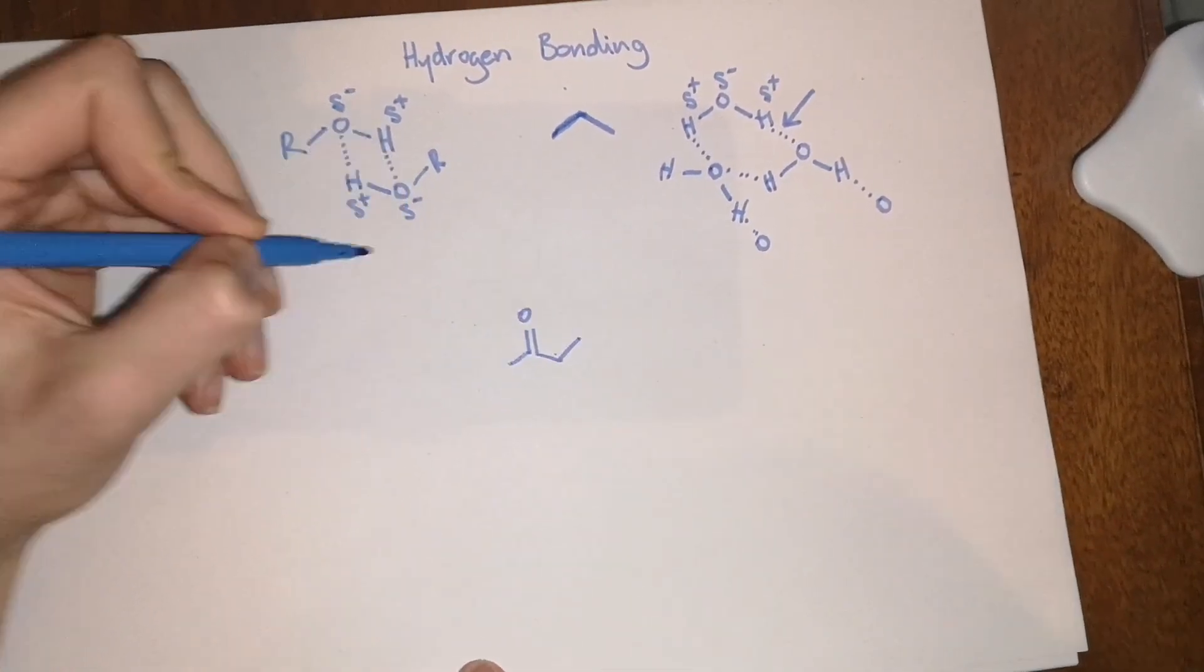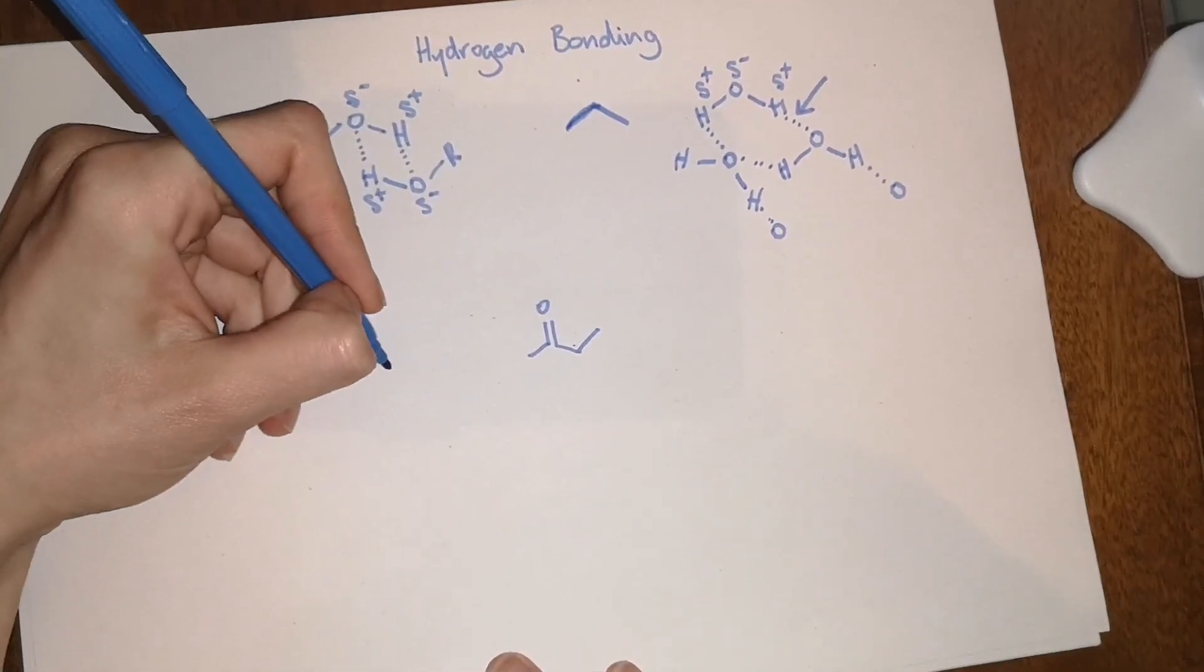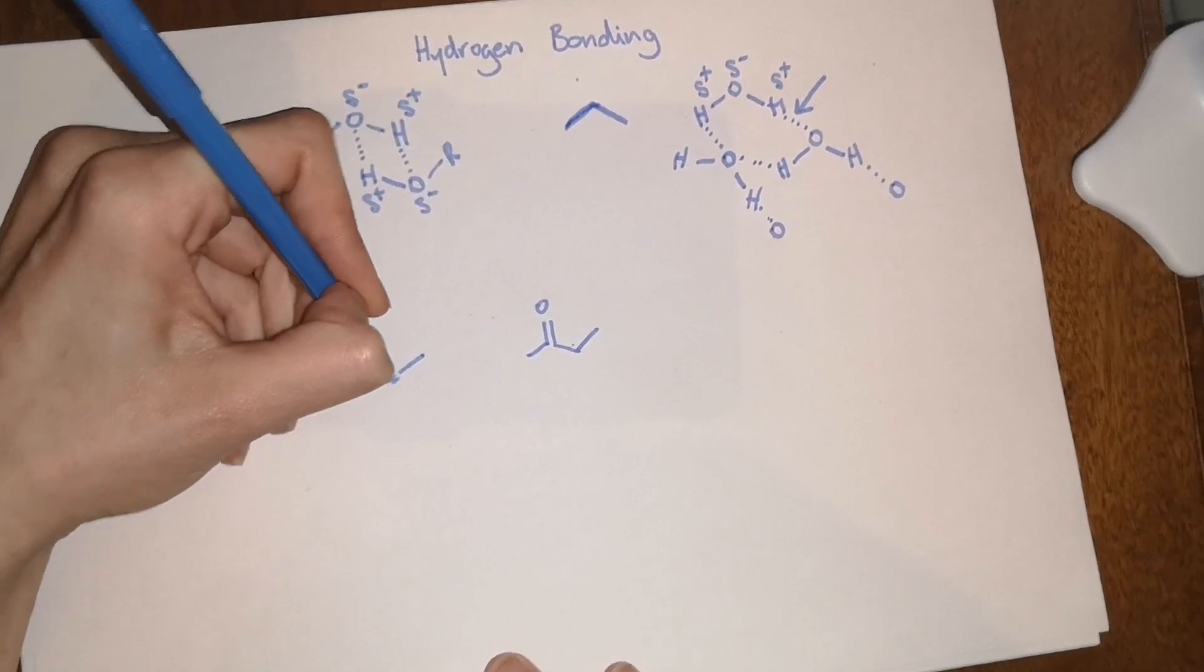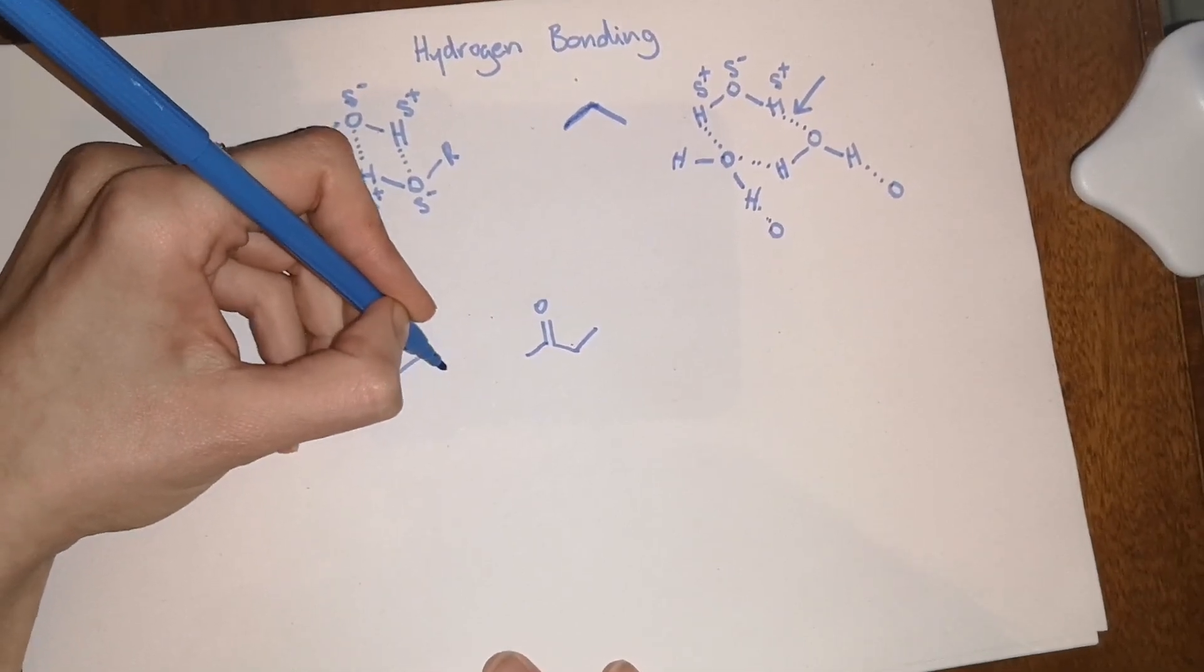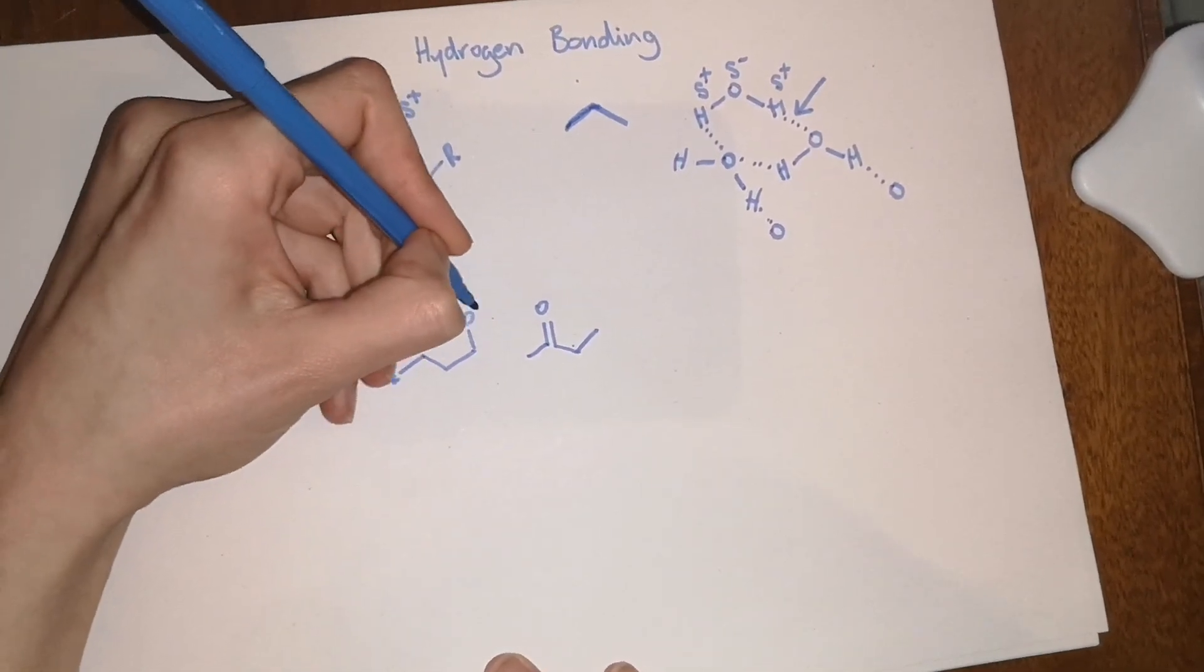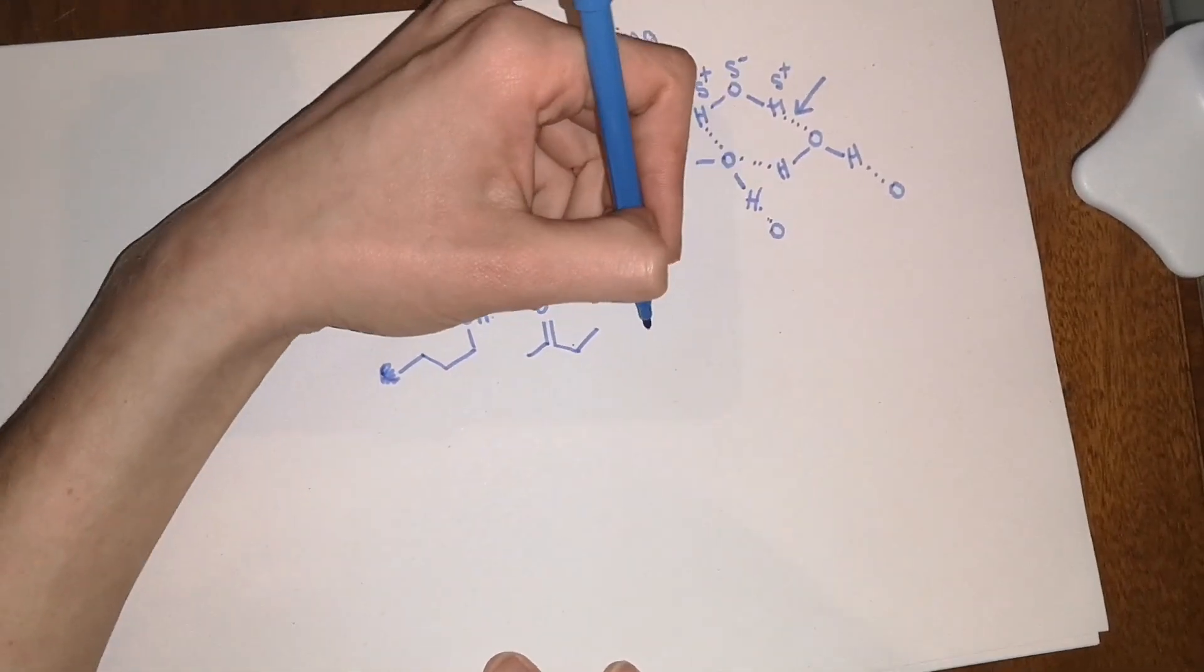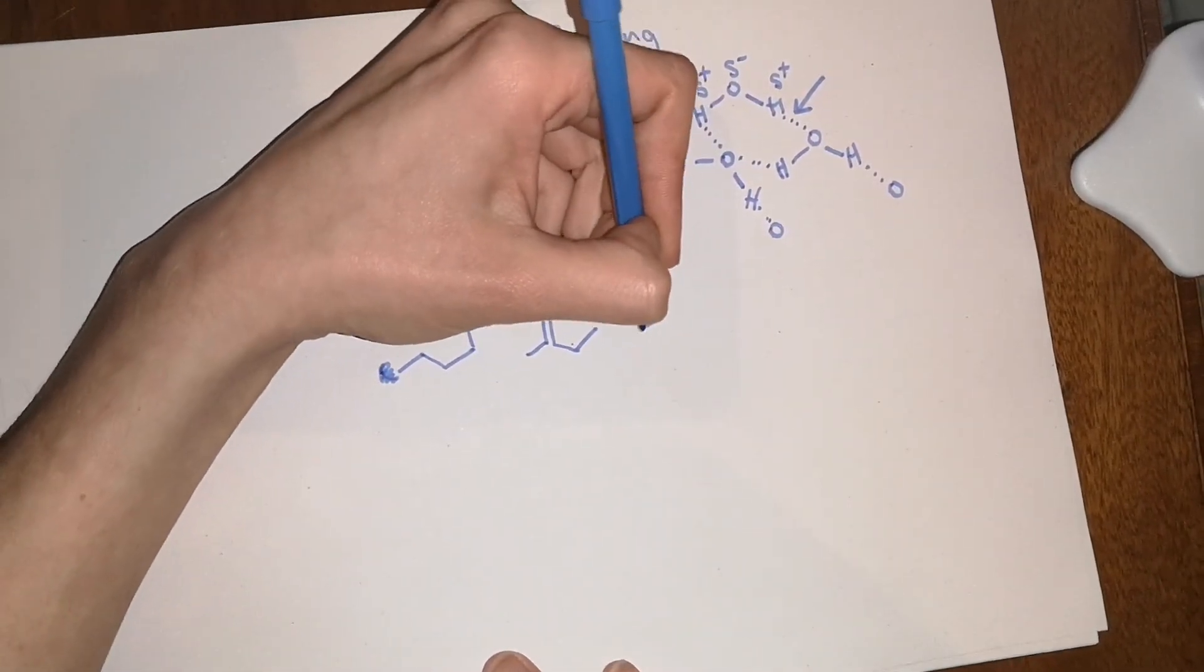So if you were to compare this ketone to an alcohol, or group one, two, three of similar size. So they have the same number of carbons, four carbons in each and this carboxylic acid.